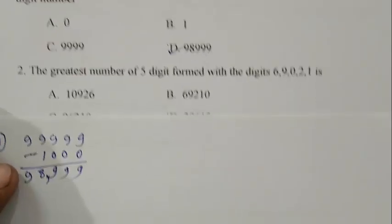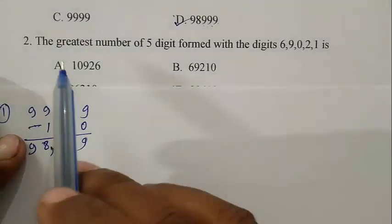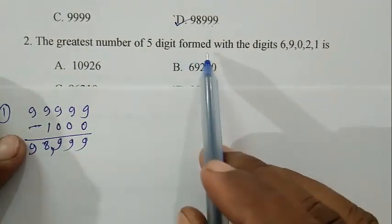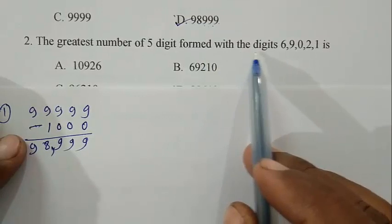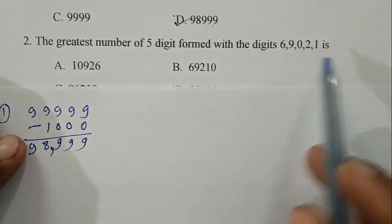Question number 2: The greatest number of 5 digits formed with the digits 6, 9, 0, 2, 1 is?